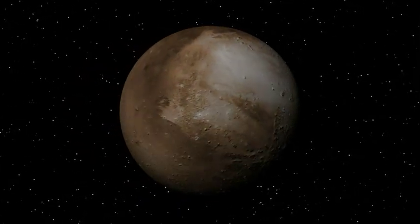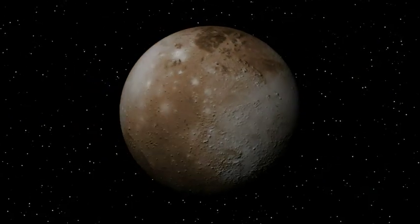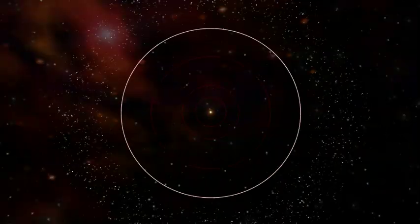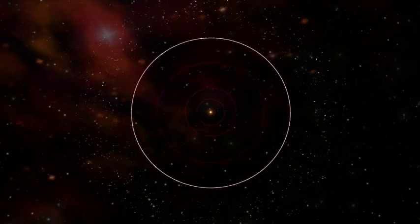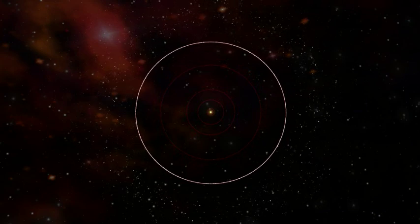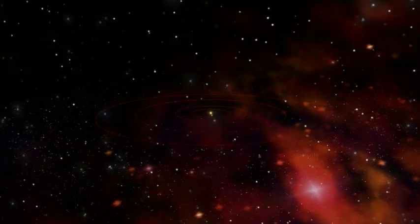Pluto is now deemed a dwarf planet and a member of the Kuiper Belt. The Kuiper Belt is a region of the solar system that extends just beyond the orbit of Neptune, at about 2.8 billion miles out to about 5 billion miles.